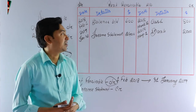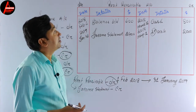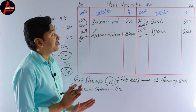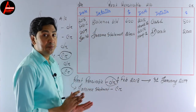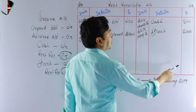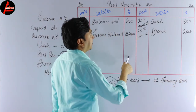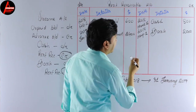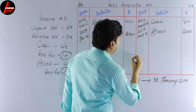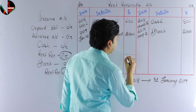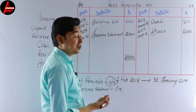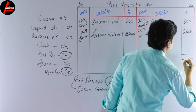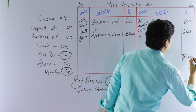We have now recorded all relevant transactions. To balance the account, we compare the two dollar columns and check which side is greater. Adding up the debit side: $600 plus $2,400 gives us $3,000. We write $3,000 as the total on the debit side, and carry that same total to the credit side.